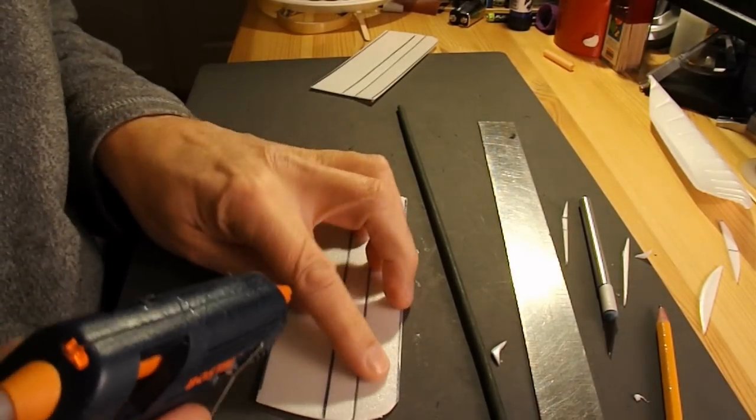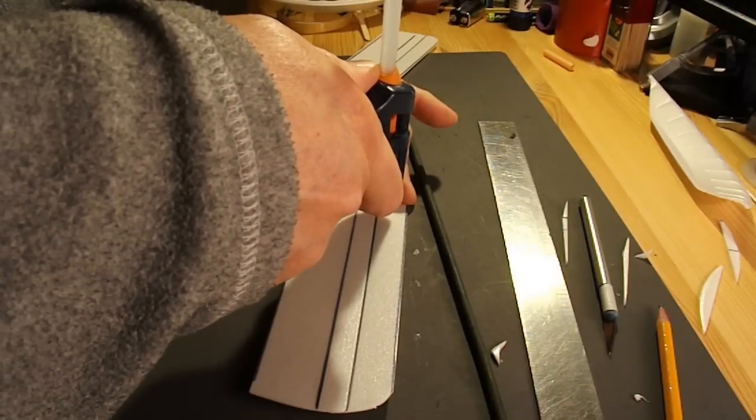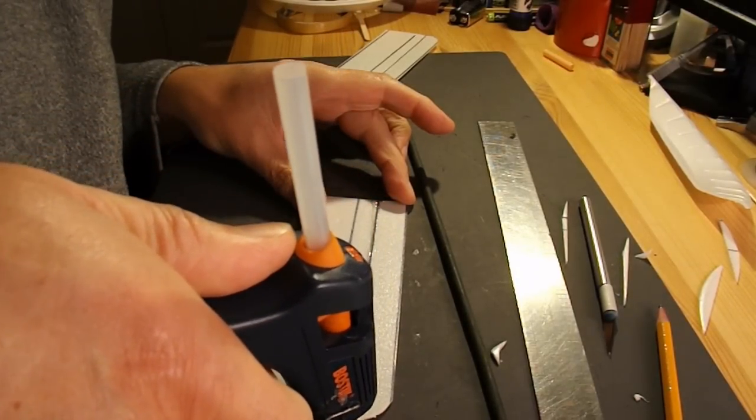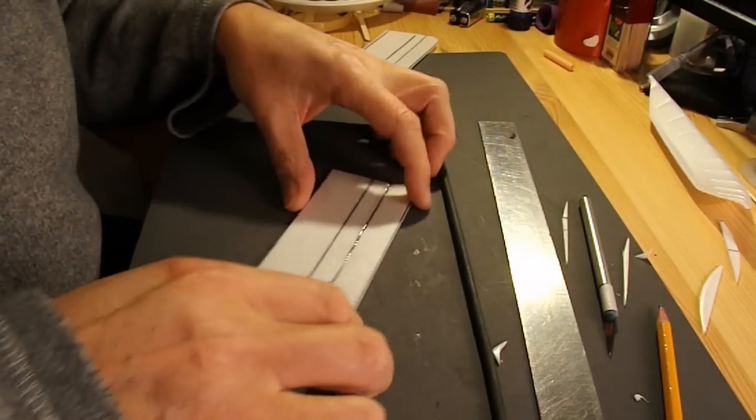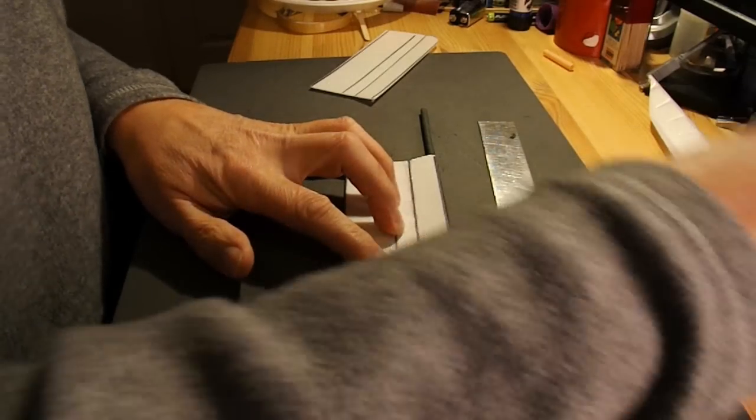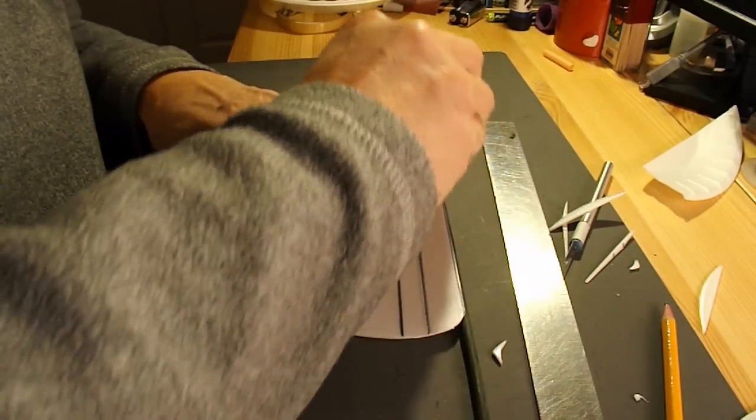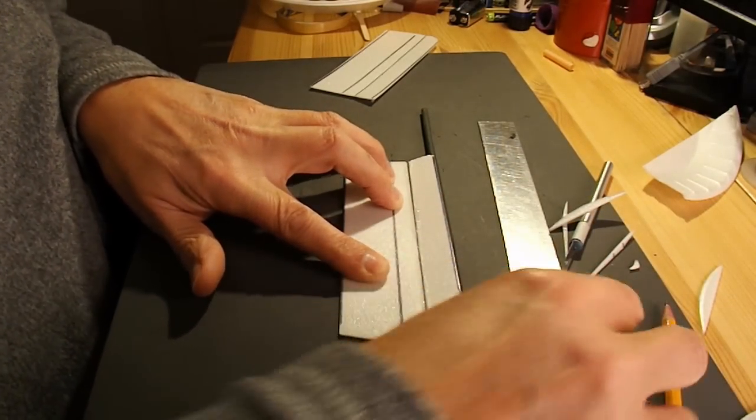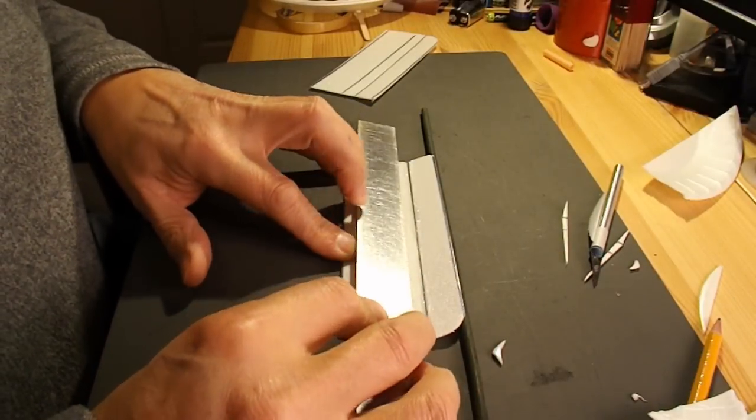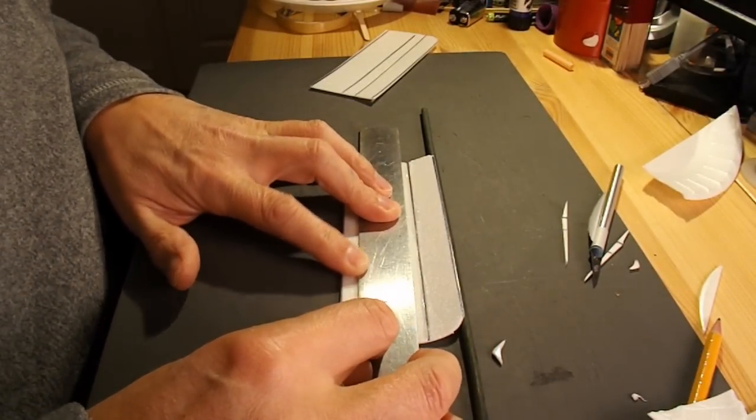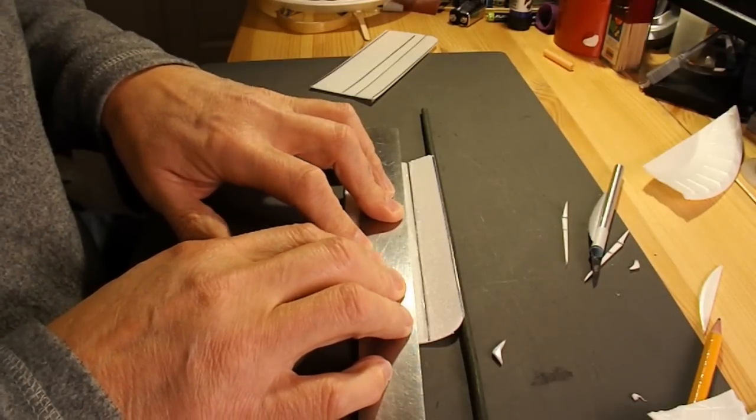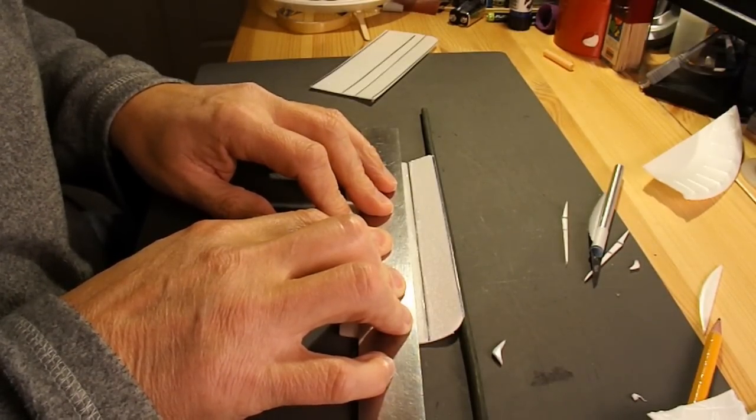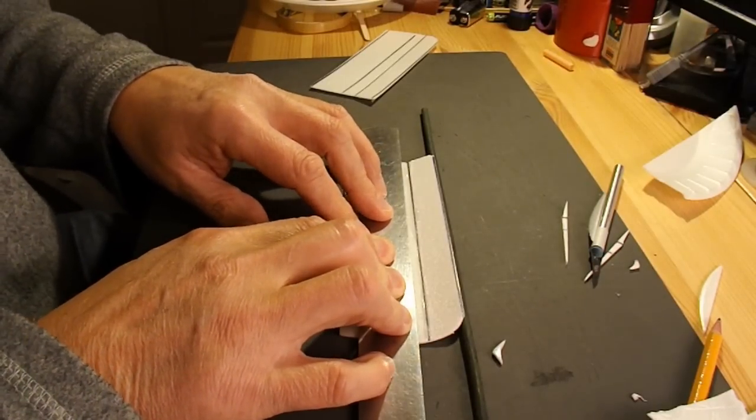I'm copying this technique off the guys on Flight Test who do excellent polystyrene model aeroplanes. So I'll get that on the edge, I'll use that to hold it flat as well. Just let that cool down and hopefully that will give us a bit of an airfoil shape to the wing. I'll do the same on the other side in a minute when that's cooled down.